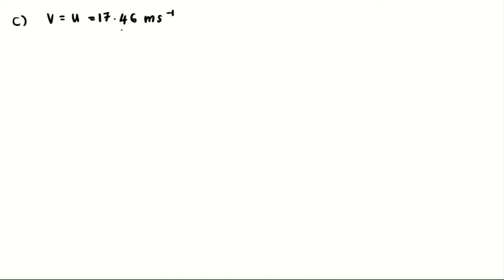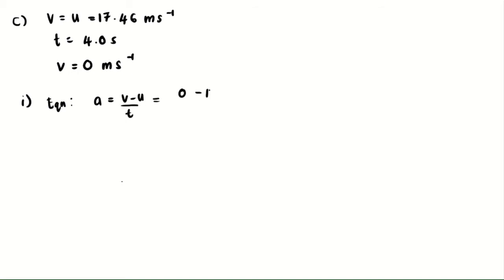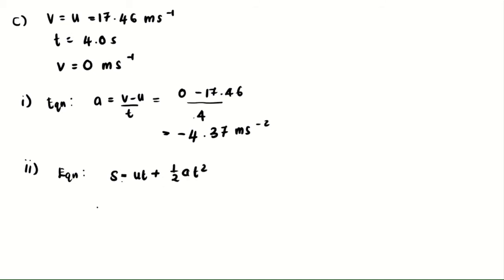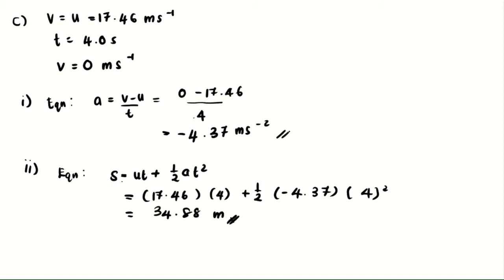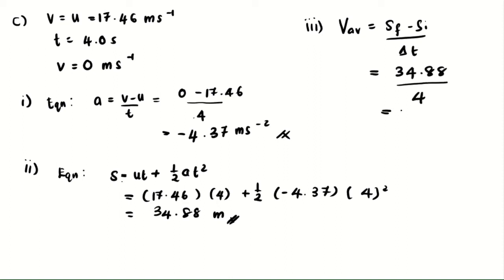Proceeding with question c: the final velocity from question a is now the initial velocity. We have t equals four seconds and final velocity equals zero meters per second as the car stops. Using a = (v − u) / t, we get negative 4.37 meters per second squared — the car decelerates. For distance, using s = ut + ½at², we get 34.88 meters. For average velocity, distance divided by time interval gives 8.72 meters per second.